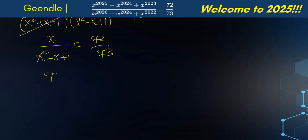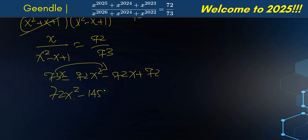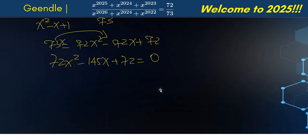Cross multiplying, we get 73x equals 72x squared minus 72x plus 72. Rearranging: 72x squared minus 72x minus 73x plus 72 equals 0, which gives us 72x squared minus 145x plus 72 equals 0.